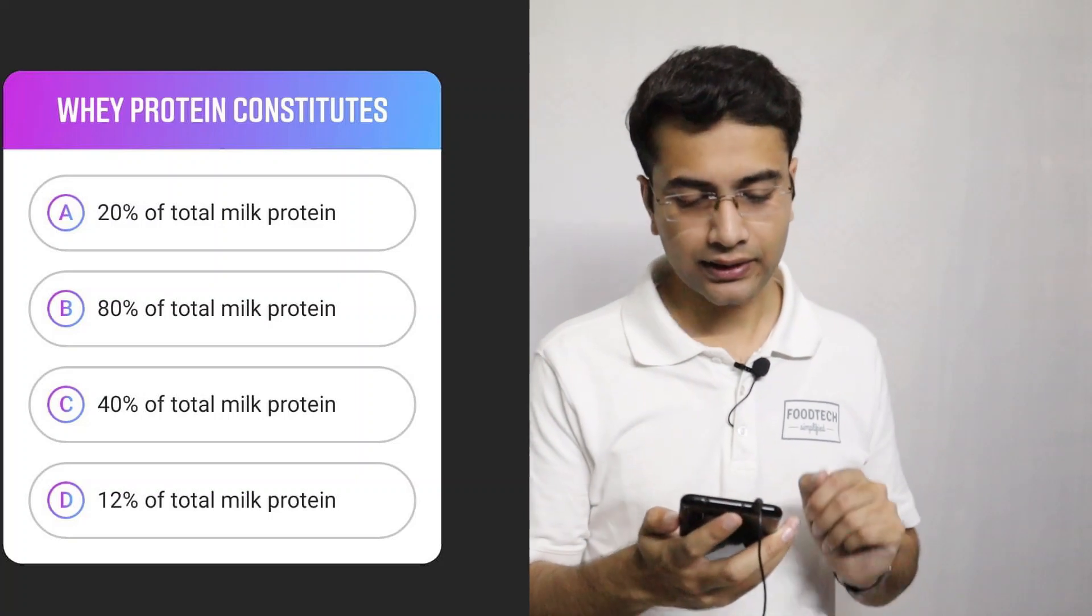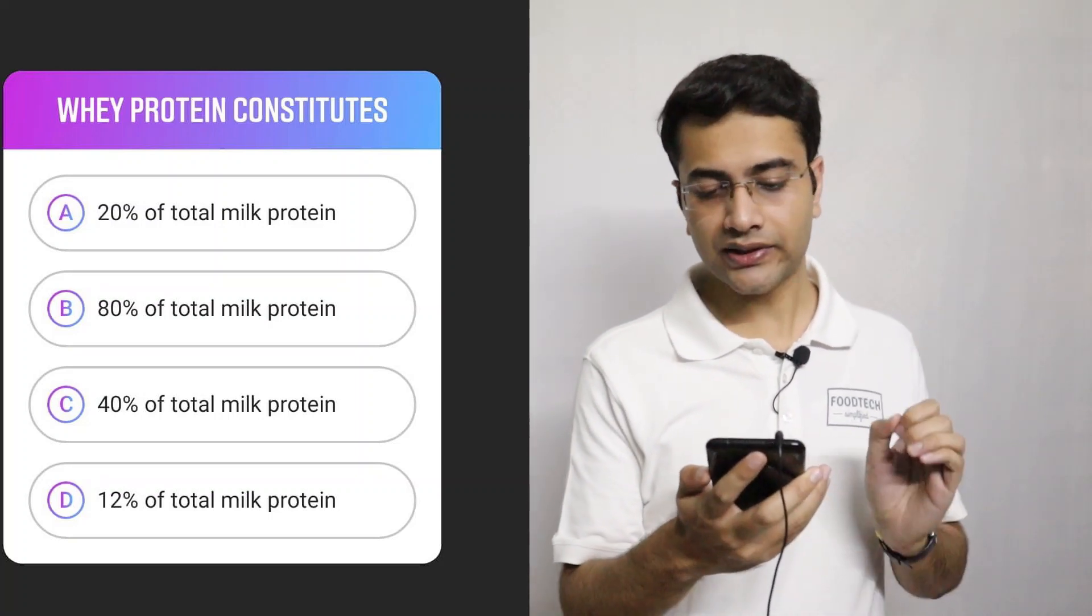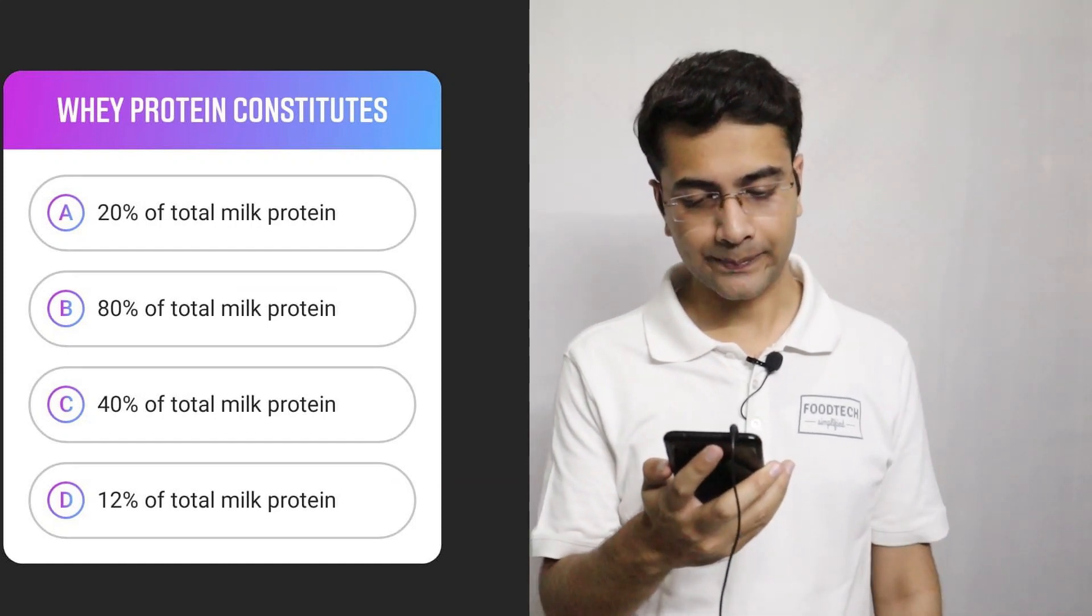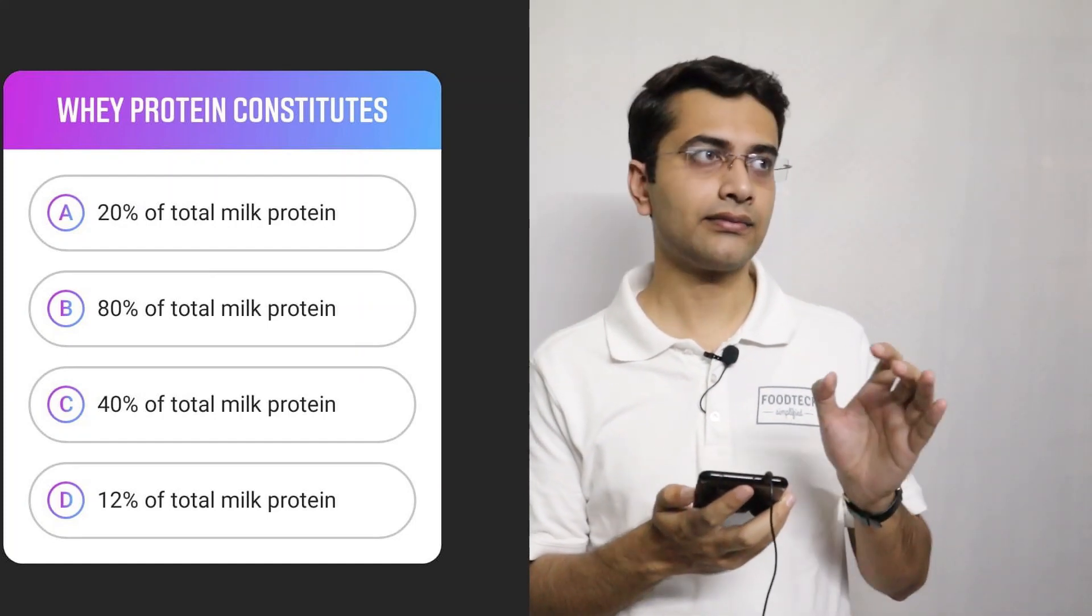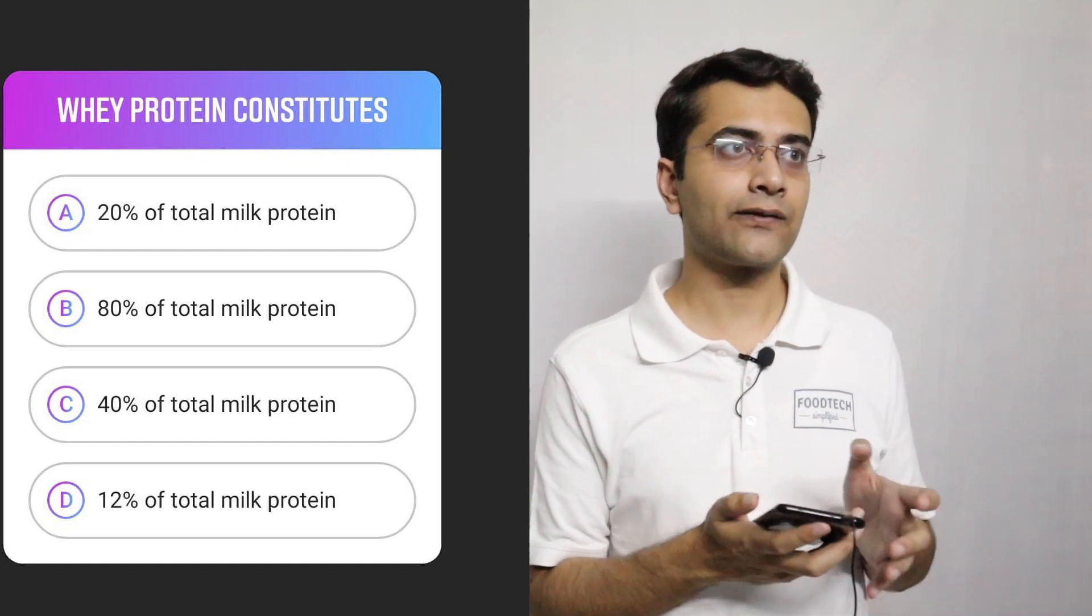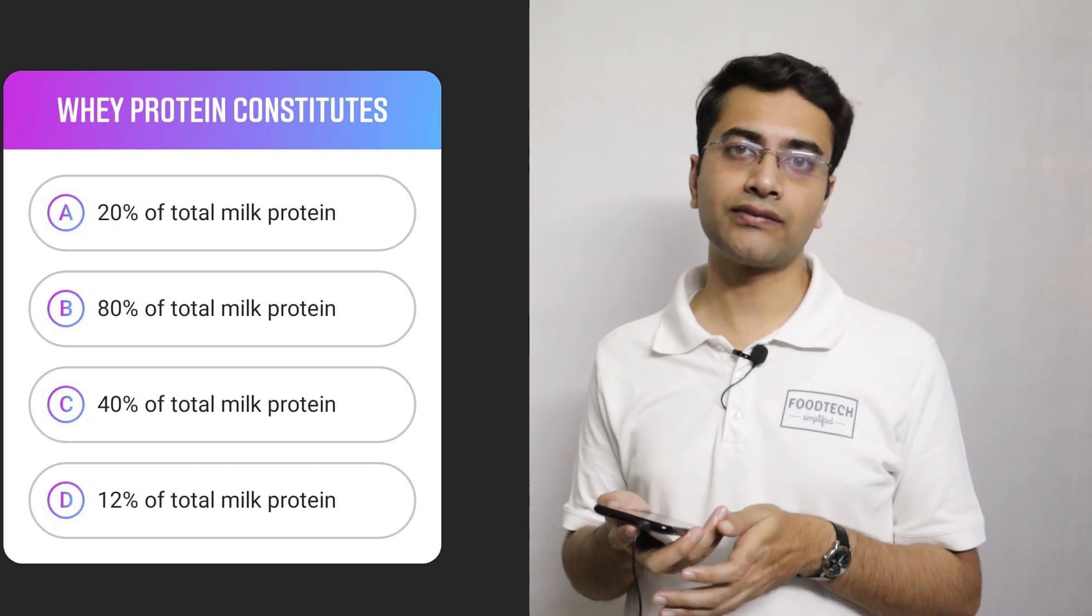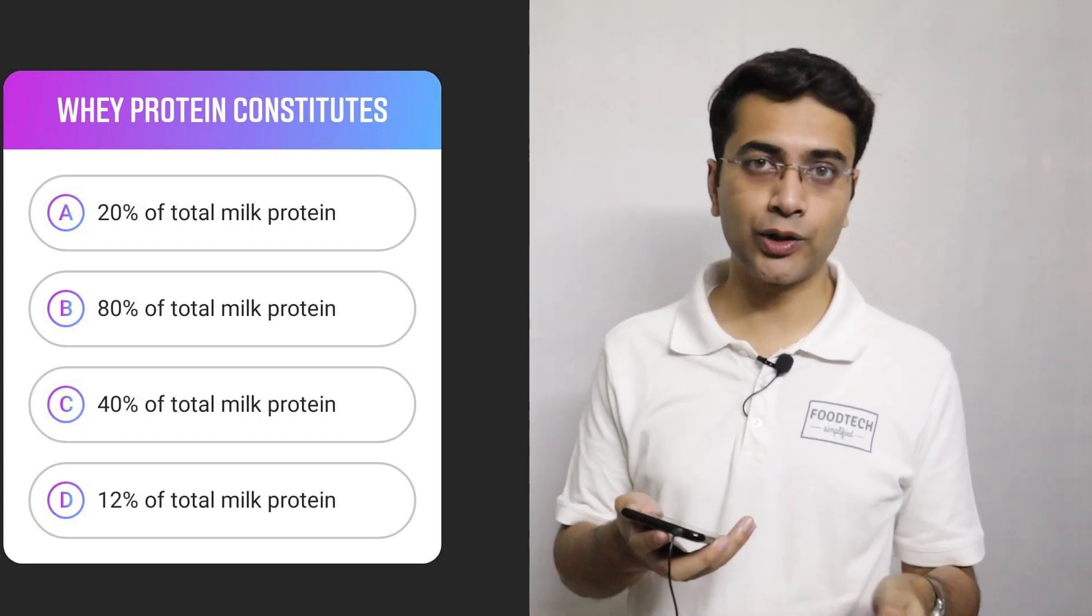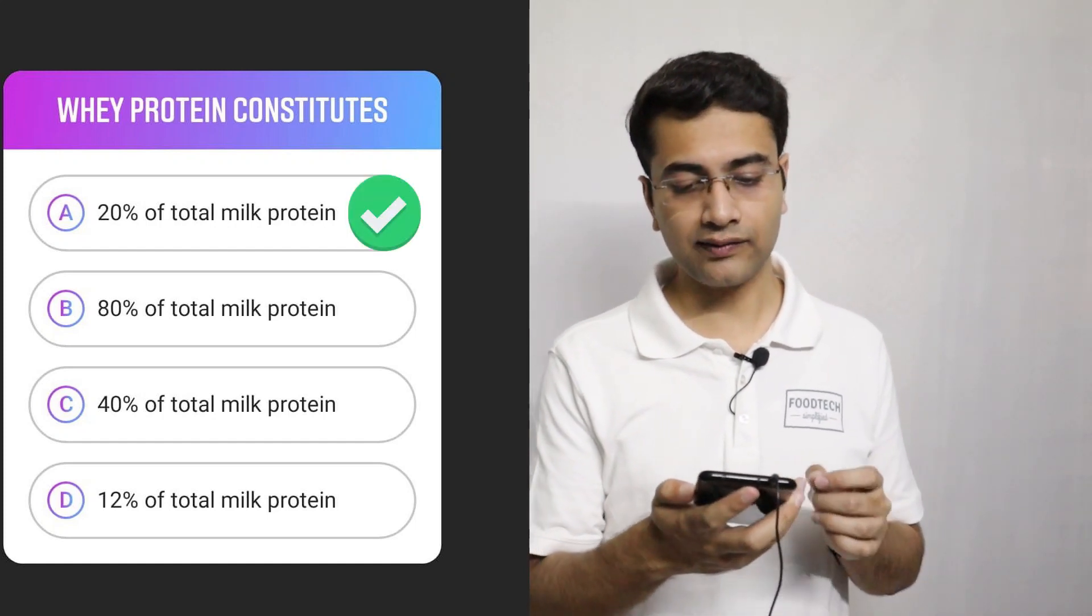Moving on to the next one. Whey protein constitutes option A 20% of total milk protein, option B 80% of total milk protein, option C 40%, and option D 12%. The division of protein in milk is like 80% of the constitution of milk protein is from casein, which is insoluble in water, whereas 20% of the contribution in milk protein is from whey protein, which is soluble in water. So the correct answer is option A, 20% of total milk protein.